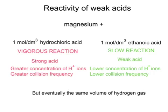Taking this further: with two solutions — one of hydrochloric acid, one of ethanoic acid — both at one mole per cubic decimetre, adding magnesium shows that the strong acid reacts vigorously whereas the weak acid reacts only very slowly. The reason is the concentration of hydrogen ions. Because the ethanoic acid has reached an equilibrium with very little H⁺, there are very few H⁺ ions to collide with the magnesium. Collision frequency is low and therefore the rate of reaction is low, whereas hydrochloric acid has a greater concentration of H⁺ and a greater collision frequency.